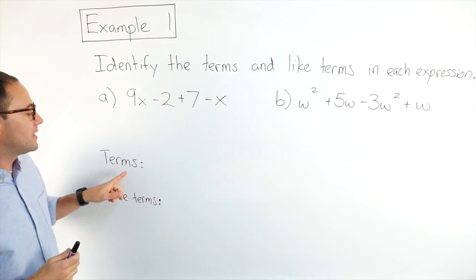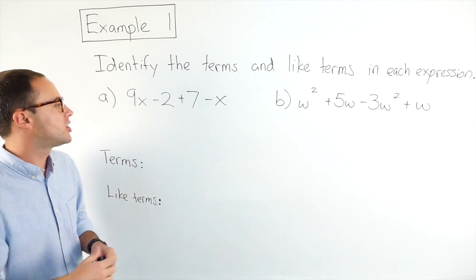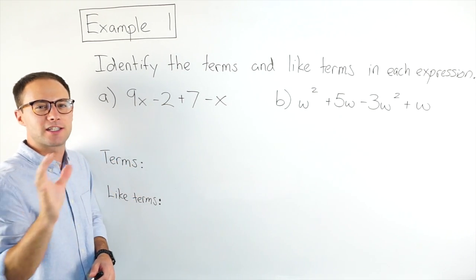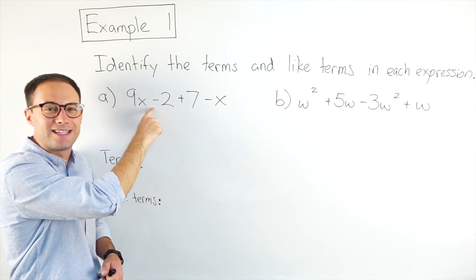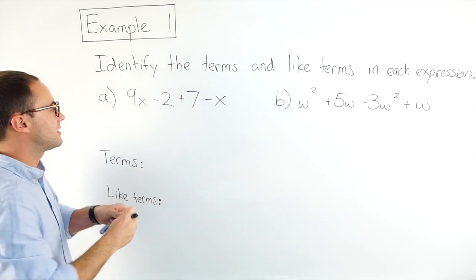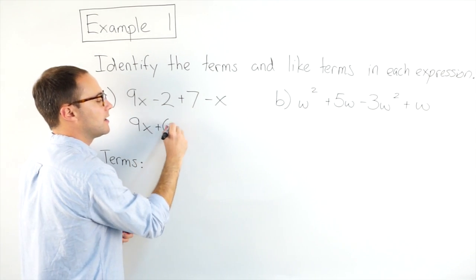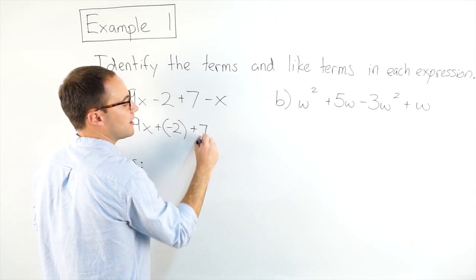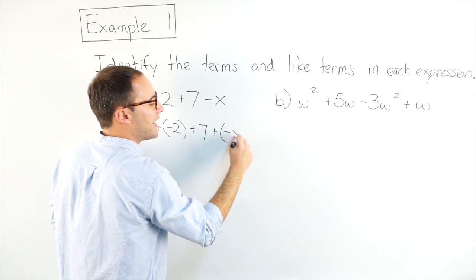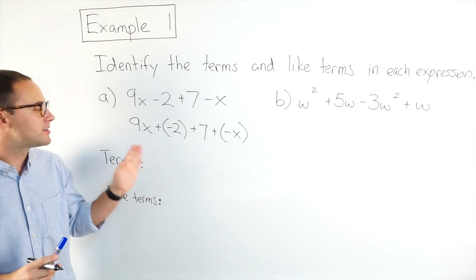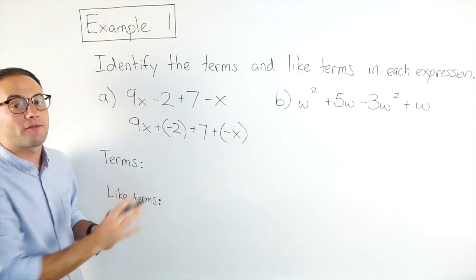First, I'm going to identify the terms. To do that, I want to change this into strictly an addition expression. So whenever I have subtraction, I'm going to change that to addition — adding the opposite. I'll rewrite this as 9x, then instead of minus 2, plus a negative 2, then plus 7, and then instead of minus x, plus negative x. So the first step is just to rewrite the expression as an addition expression.